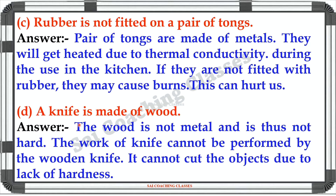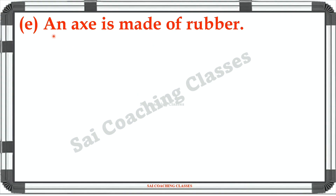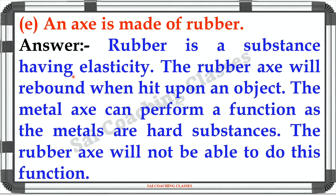D: A knife is made of wood. Answer: Wood is not metal and is thus not hard. The work of a knife cannot be performed by a wooden knife. It cannot cut the object due to the lack of hardness. D: An axe is made of rubber. Answer: Rubber is a substance having elasticity. The rubber axe will rebound when hit upon an object. The metal axe can perform the function as metals are hard substances. The rubber axe will not be able to do this function.